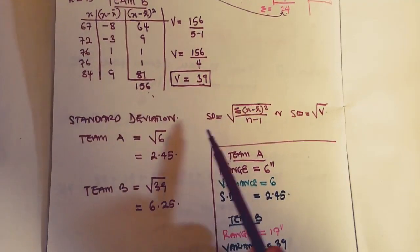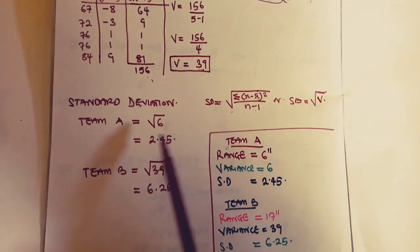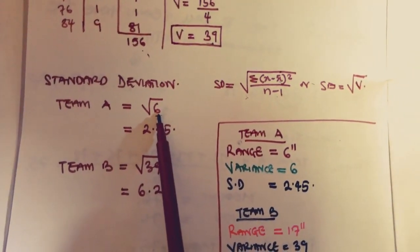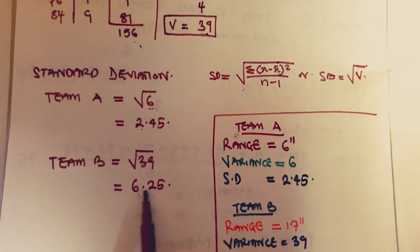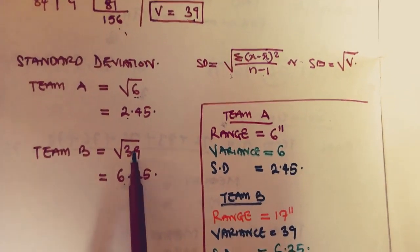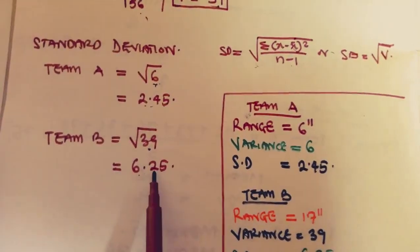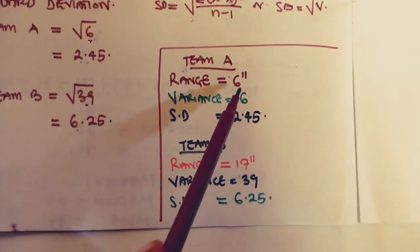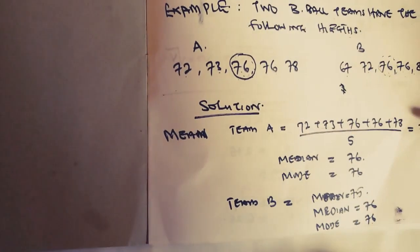For standard deviation, it is simply the square root of the variance. For Team A, the square root of 6 gives us 2.45, and for Team B, the square root of 39 gives us 6.25. So the standard deviations are 2.45 and 6.25 respectively. You can see the difference between the two teams — they are actually not the same, contrary to what the measures of central tendency suggested. Thank you for listening.